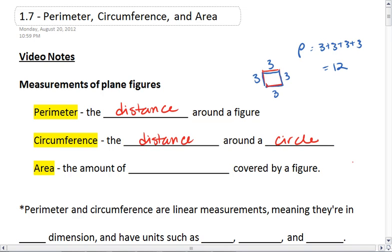And lastly, area. Area is the amount of surface covered by a figure. So the area would be the surface of this quadrilateral or the surface of the circle.